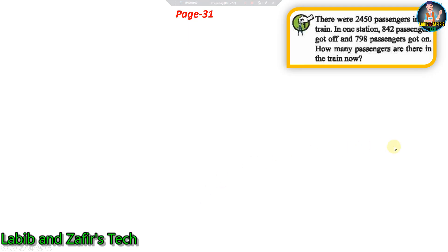Next question: There are two thousand four hundred fifty passengers in the train. At one station, eight hundred forty-two passengers got off and seven hundred ninety-eight passengers got on. How many passengers are there in the train now?